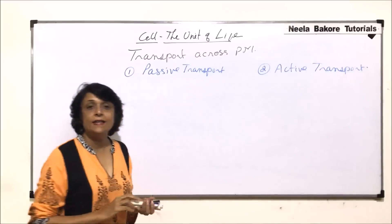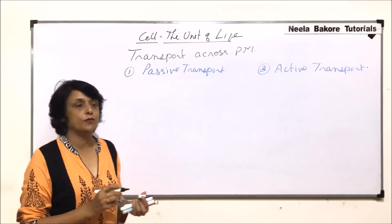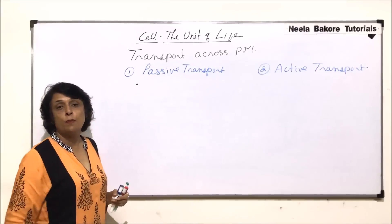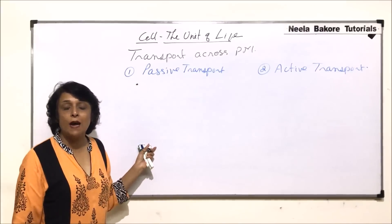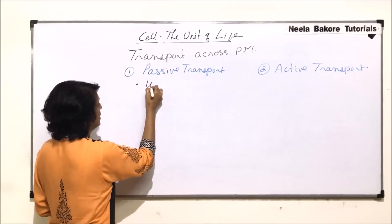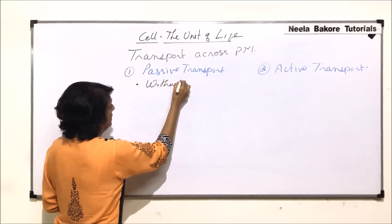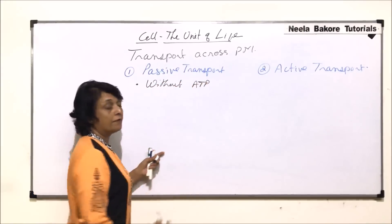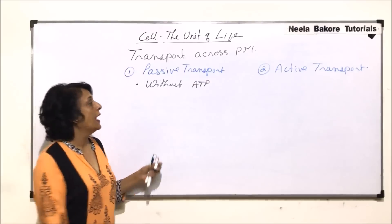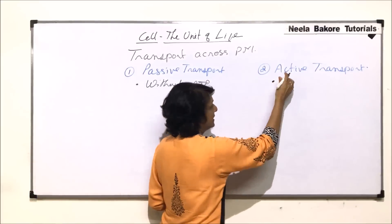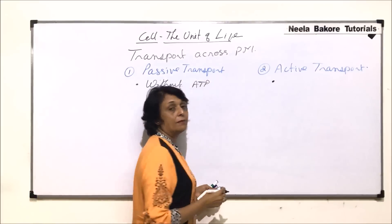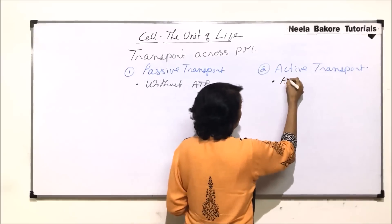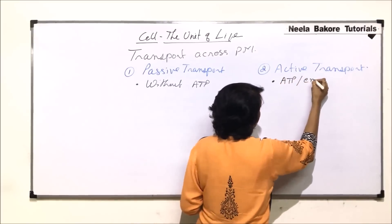Let us talk about what exactly happens in these two types of transport. Passive means without expenditure of energy — without ATP, without spending energy. Active means energy is essential, so it is ATP or energy dependent.